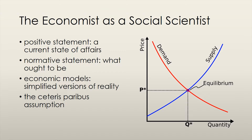To answer cause and effect questions in economics, we use economic models. A model is a description of some aspect of the economy that includes only those variables that are needed to assess what we are looking at. Essentially, we assume that nothing else in the economy changes except what we are looking at. This is known as the Ceteris Paribus assumption.